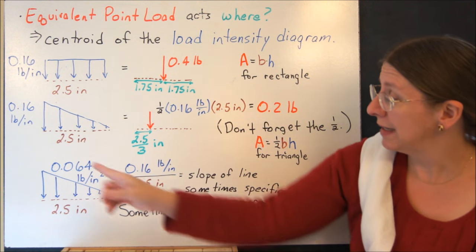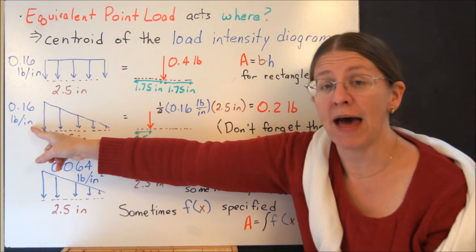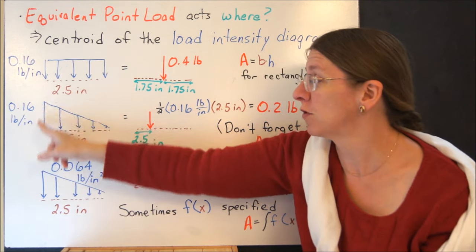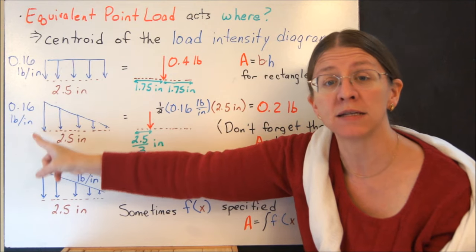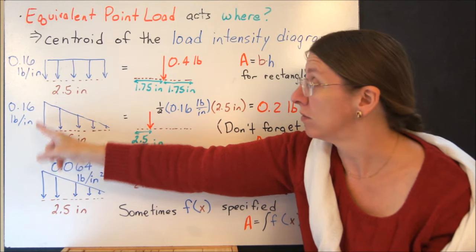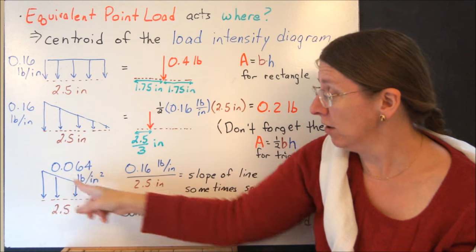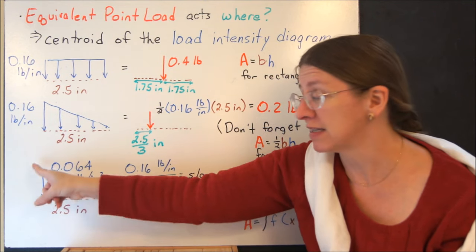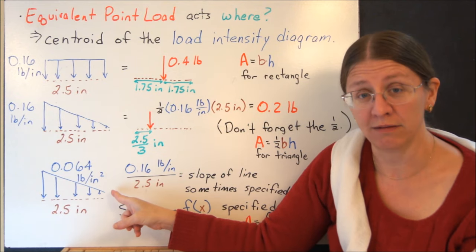Sometimes what we give you isn't actually the height of that arrow. See how this number refers to the length of that distributed load arrow, just like this one does. Here, what I've done is I've specified for you not the height of this side, but the slope of that line.